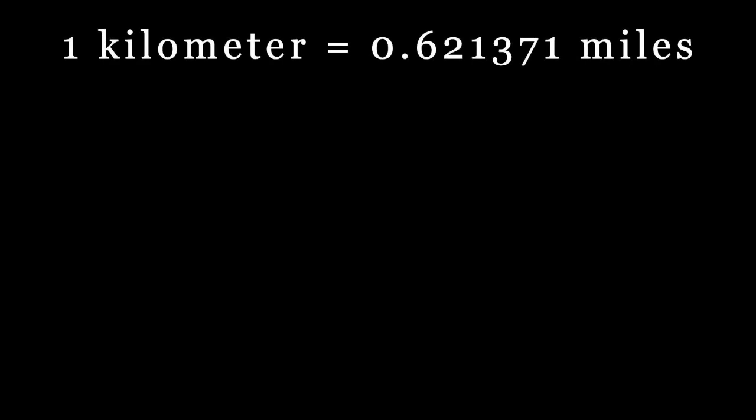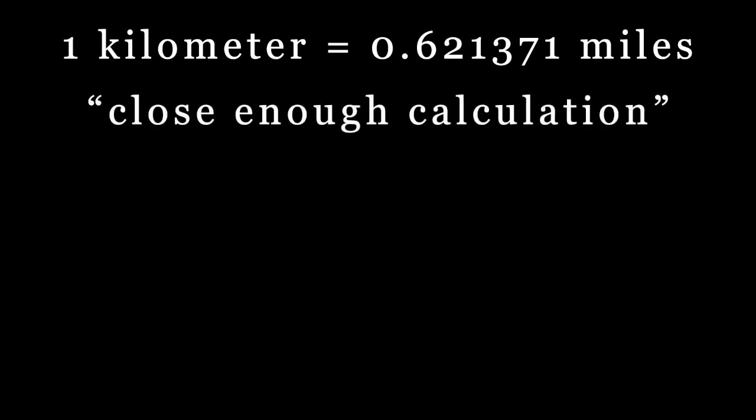One kilometer is equal to 0.621371 miles. That's a pretty tough calculation to do in your head, so let's go with something that is just a close enough calculation. One kilometer equals 0.6 miles.